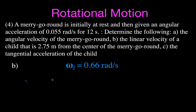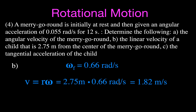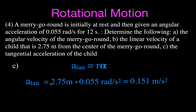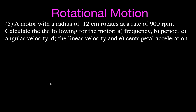For letter b, the linear velocity of a child 2.75 m from the center: using v equals r times omega, that's 2.75 times 0.66, which gives 1.82 meters per second. Note: the farther from the center, the greater the linear velocity, even though angular velocity is the same. For letter c, tangential acceleration equals r times alpha: 2.75 times 0.055 equals 0.151 meters per second squared.